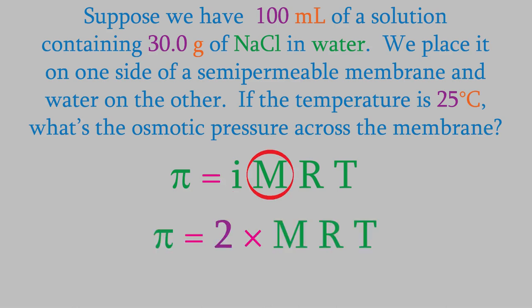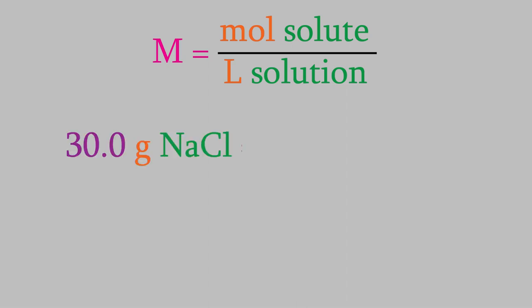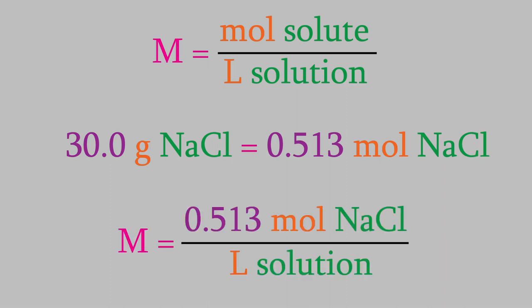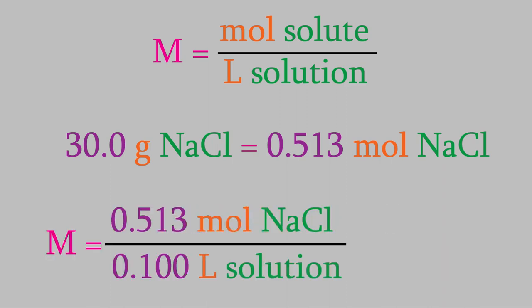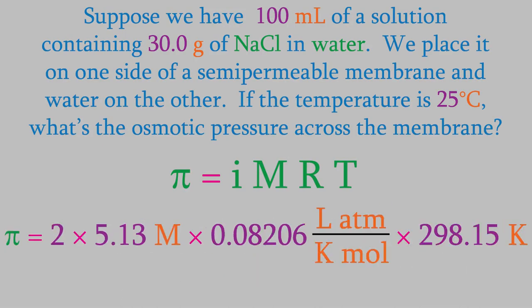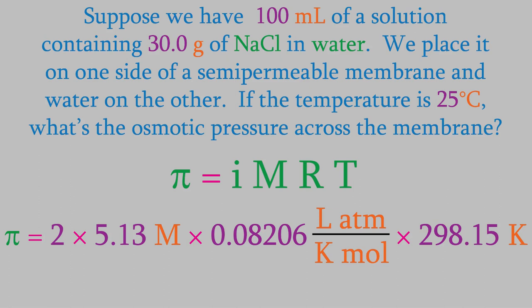For M, we need to calculate the molarity. We have 30.0 grams of sodium chloride. Using the periodic table, we find that this is 0.513 moles. We have 100 milliliters of solution, which is 0.100 liters, and that gives us a molarity of 5.13 M. R is the gas law constant I mentioned earlier, and T is the temperature. Don't forget to convert it into Kelvins. Solving the equation gives us an osmotic pressure of 251 atmospheres, a very high pressure.